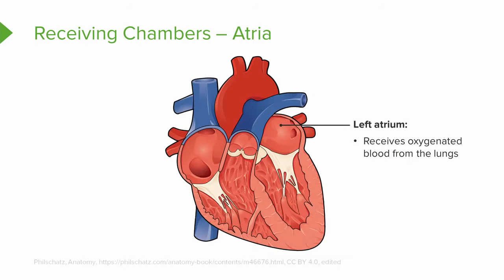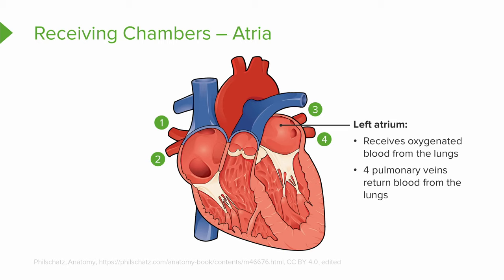The left atrium of the heart receives oxygenated blood that is returning to the heart from the lungs. There are four pulmonary veins that feed into this left atrium from the lungs.